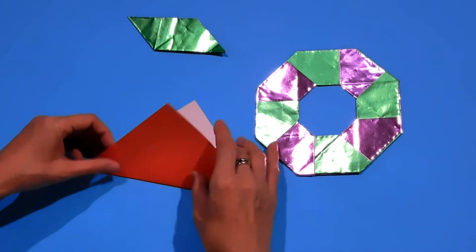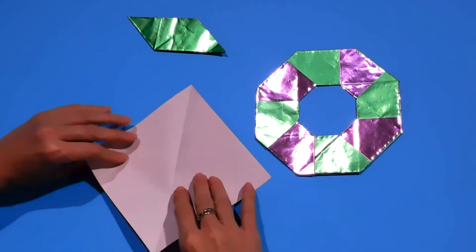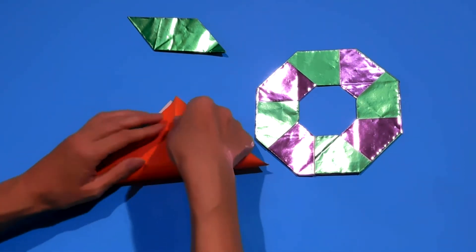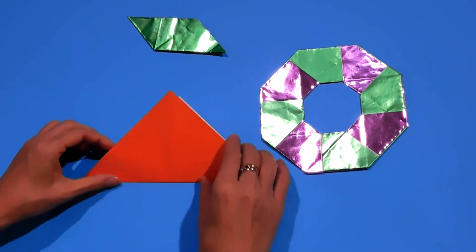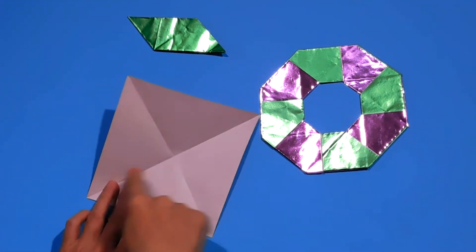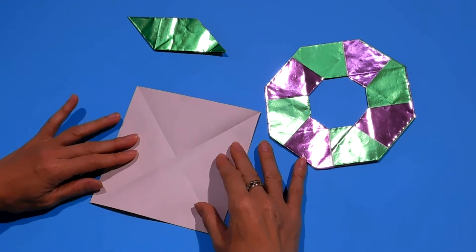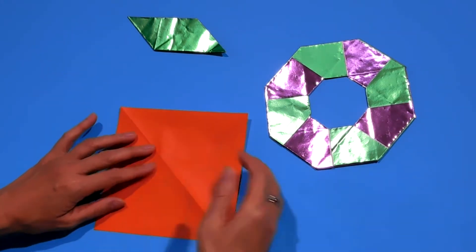So from here, open up and turn it over. Use the opposite way to have an X crease. As a result, you have the X crease. And from here, turn it over, now color side up.